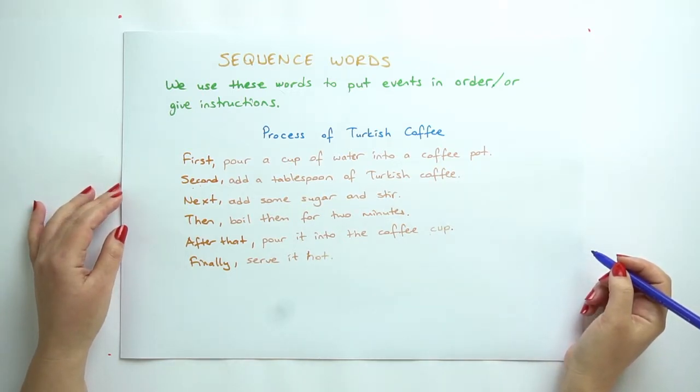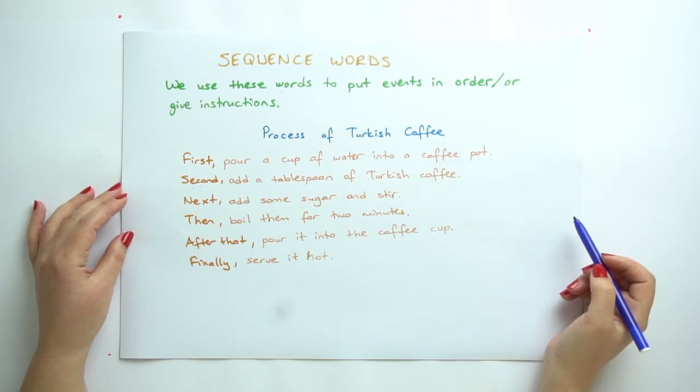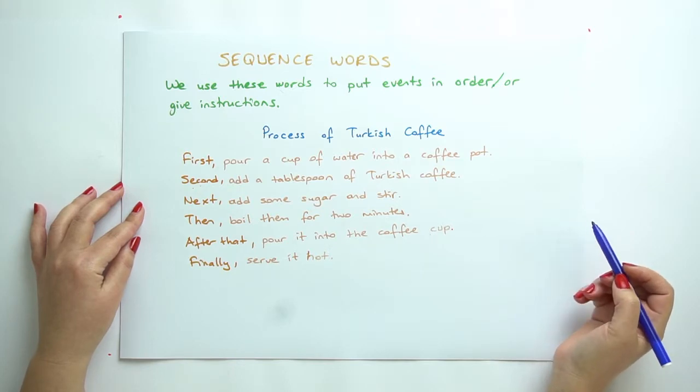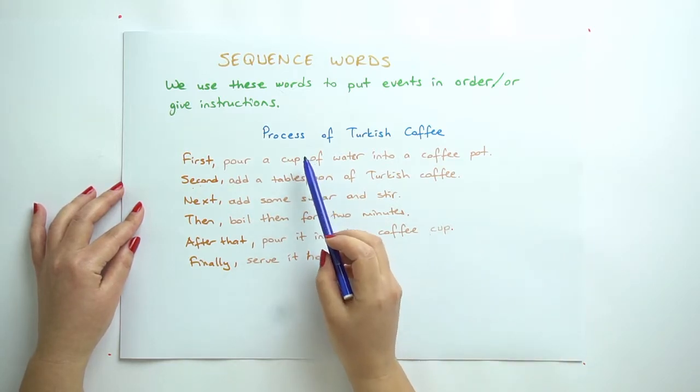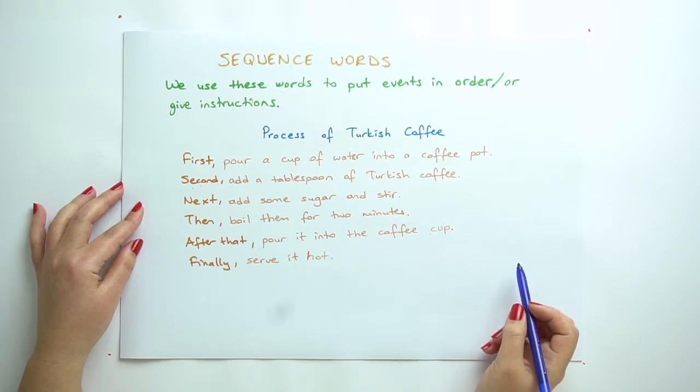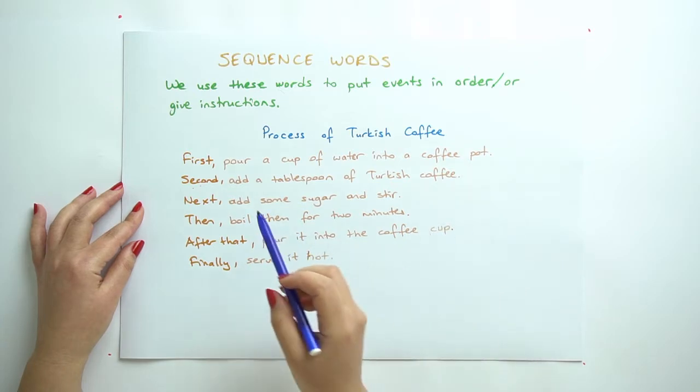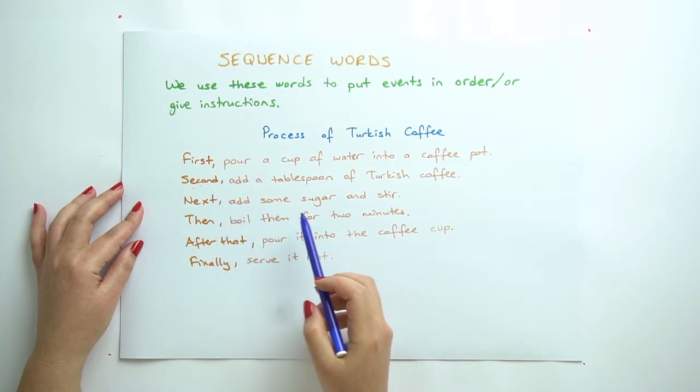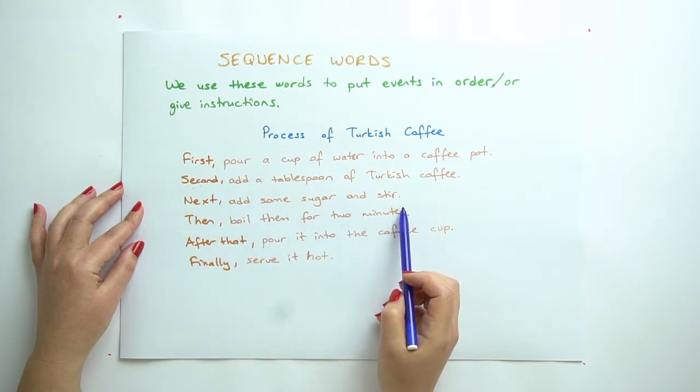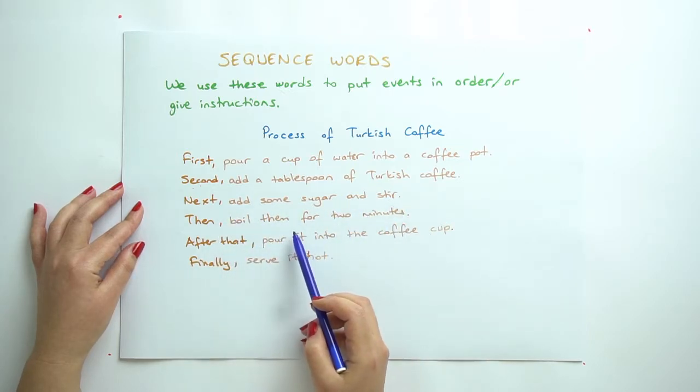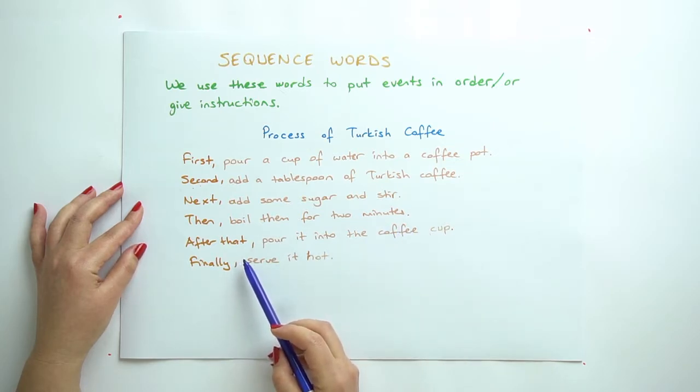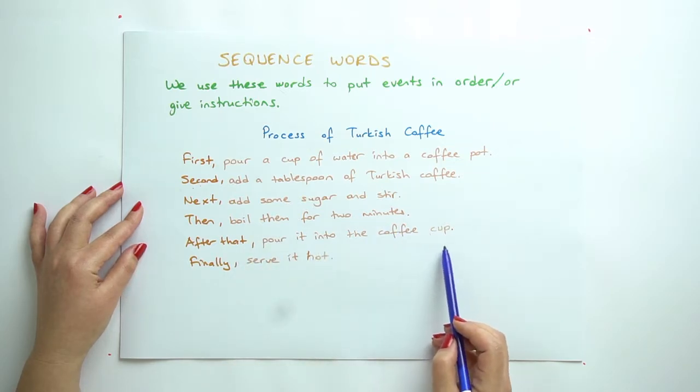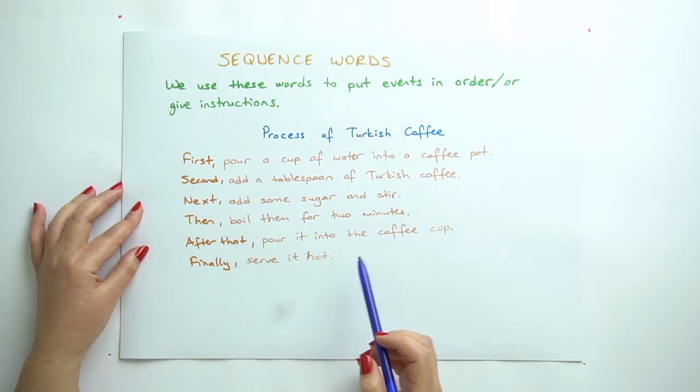Okay, sequence words. We use these words to put events in order or give instructions. For example, process of Turkish coffee. First, pour a cup of water into a coffee pot. Second, add a tablespoon of Turkish coffee. Next, add some sugar and stir. Then boil them for two minutes. After that, pour it into the coffee cup. And finally, serve it hot.